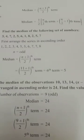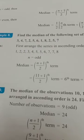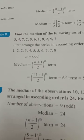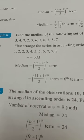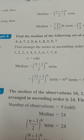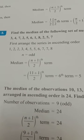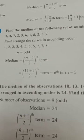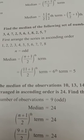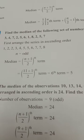Find the median of the following data: three, four, seven, two, five, six, one, eight, two, five, seven. First you have to arrange in ascending order: one, two, two, three, four, five, five, six, seven, seven, eight.